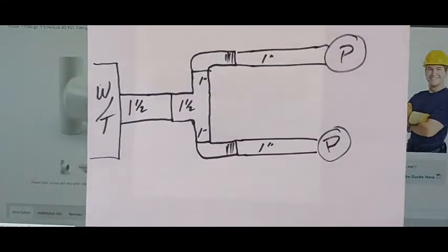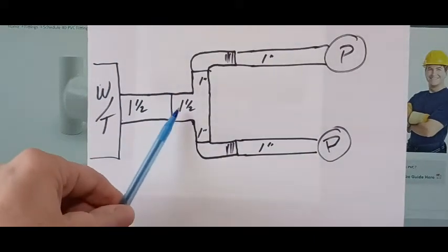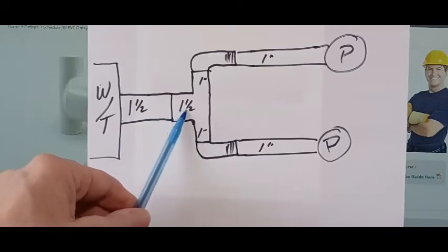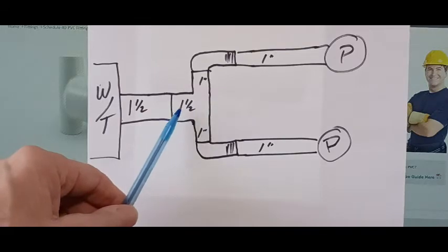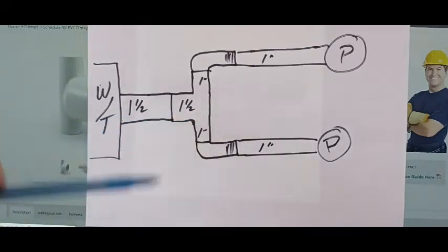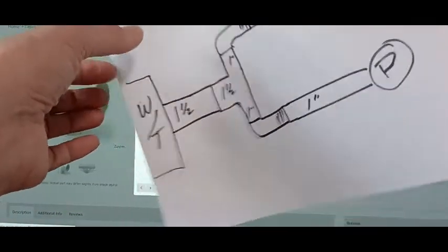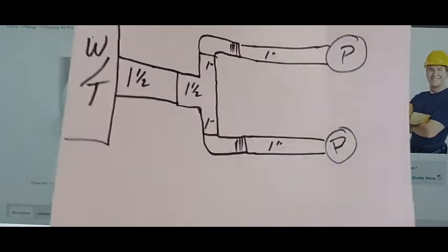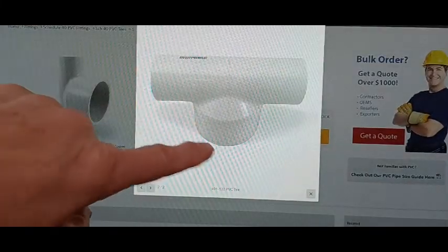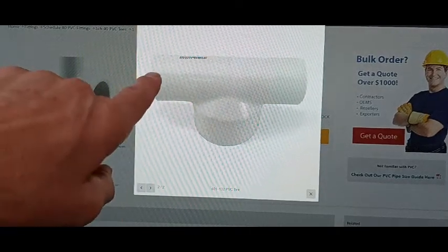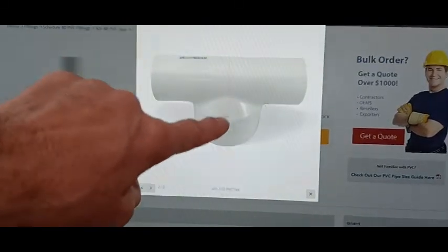If you cannot find a bull tee - now here's a bull tee. This one happens to be an inch and a half by inch by inch. This would be perfect. This is a bull tee.